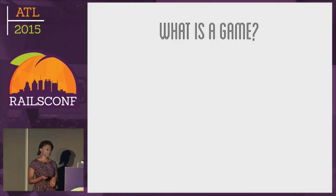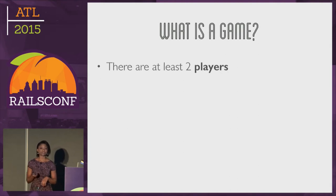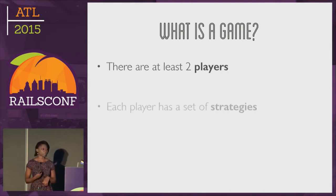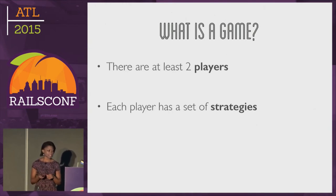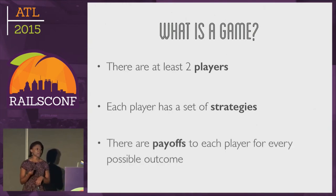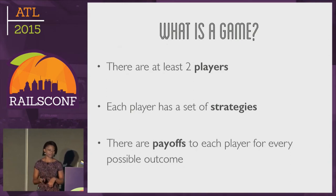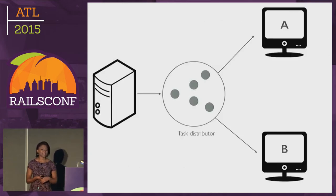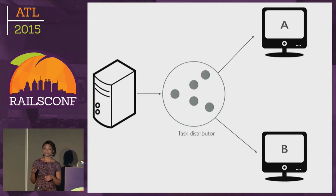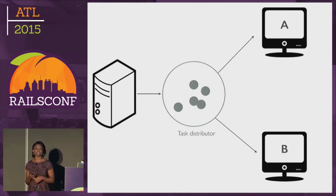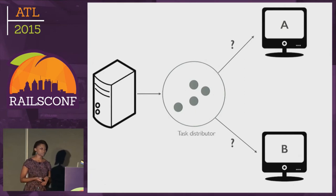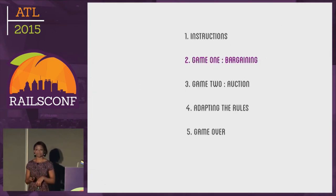So what is a game? There are always at least two players. Each player has a set of strategies, which is based on the information they have and the actions that they take. And there are payoffs to each player for every possible outcome. We're going to look at a game that helps us solve the load-balancing problem. We've got a distributed system with two computers, and we have a scenario where jobs are being sent into a task distributor, which then has to decide how many jobs to send to each computer.